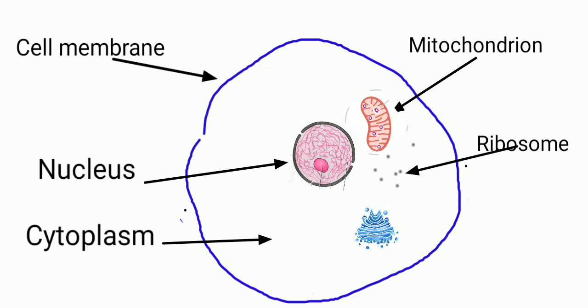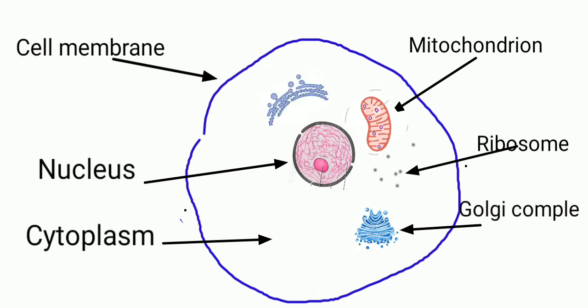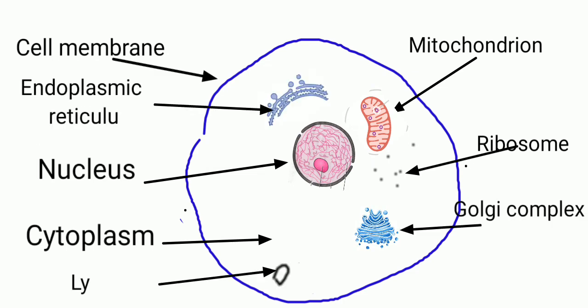Cells have organelles including mitochondria, ribosomes, Golgi complex, endoplasmic reticulum, lysosomes, and peroxisomes. In a plant cell, there is a large central vacuole and the outer covering is a cell wall. Animal cells do not have these structures — they lack a large central vacuole and a cell wall.